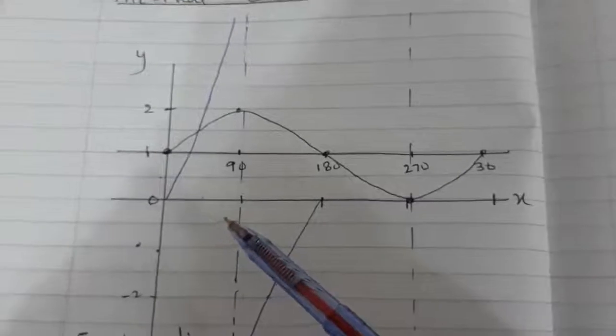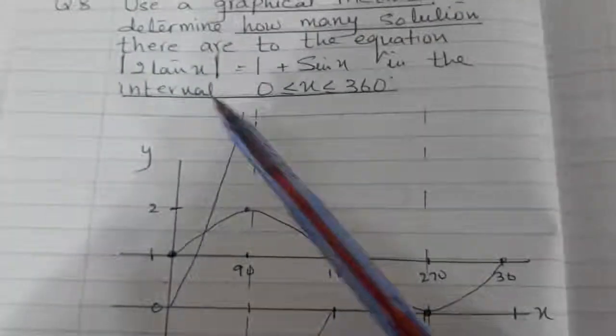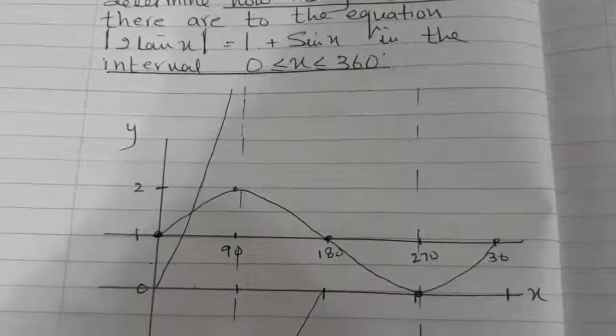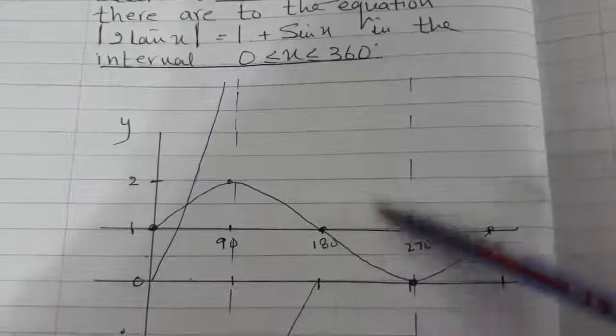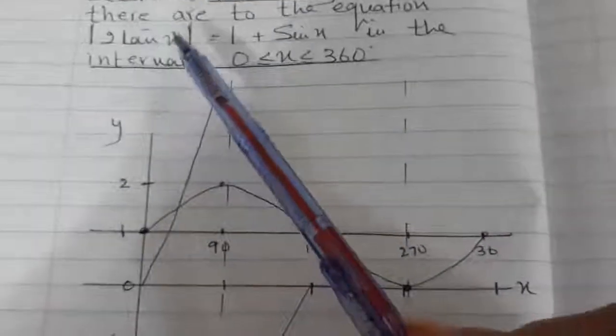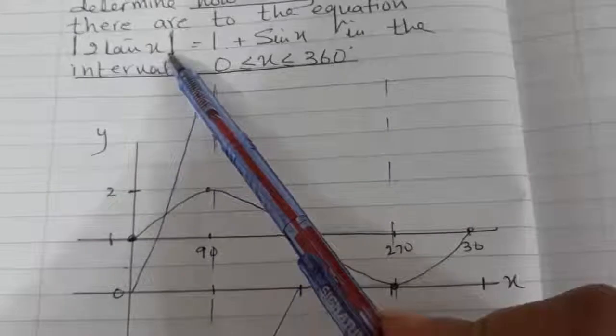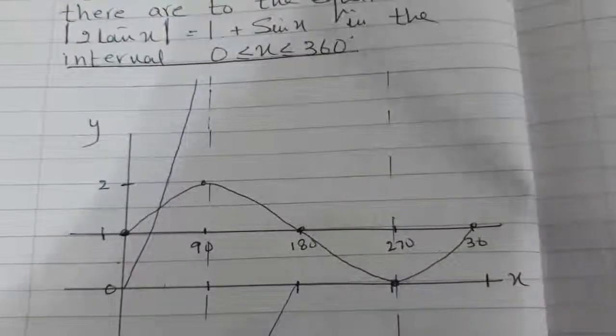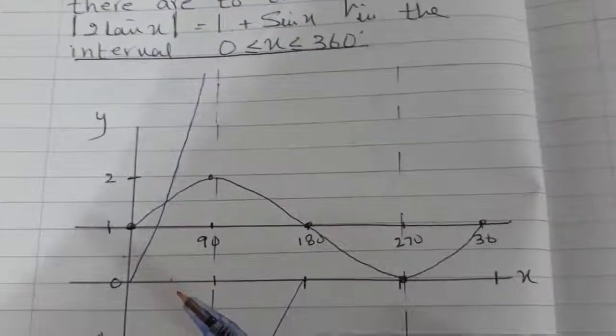If you look at it, first of all I will draw 2tan x. I have done half of the graph here because I wanted to explain and draw at the same time. The technique is: whenever the curve is in the modulus, for the time being you forget there is any modulus — you just sketch 2tan x. For 2tan x, basically it is 2tan x plus 0, where 0 is the axis of the curve, and there is no amplitude because there is no maximum or minimum point in the tan curve.